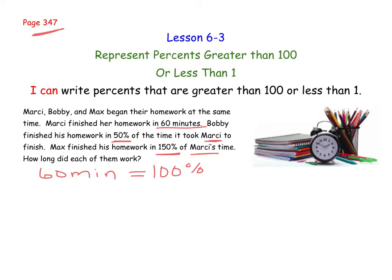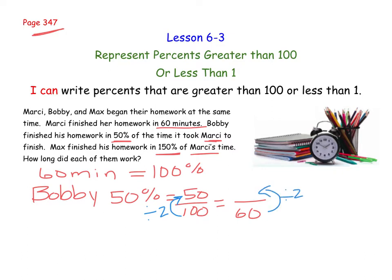Next, let's take a look at Bobby. Bobby finished his homework in 50% of the time it took Marcy. So Bobby had 50%, which is 50 out of 100. And remember, Marcy's time was that 100%, which was 60 minutes. So now we've got to figure out what was Bobby's time. What do you do to the number 100 to get 50? Well, you divide by 2. And whatever you do to one fraction, you have to do to the other. So let's take our 60 and divide it by 2, and 60 divided by 2 is 30. So Bobby worked for 30 minutes.